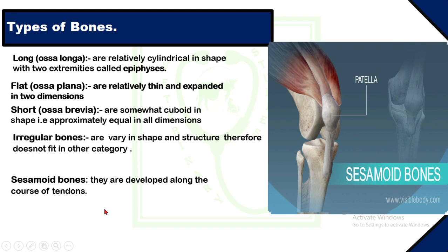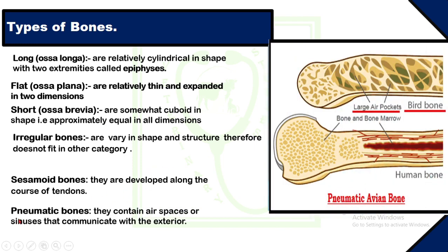Sesamoid bones are small round bones found in the tendons of the legs and feet of animals. The patella is an example of a sesamoid bone. Pneumatic bones are bones that contain air spaces or sinuses that communicate with the exterior. These bones are found in birds, where they act as air sacs.